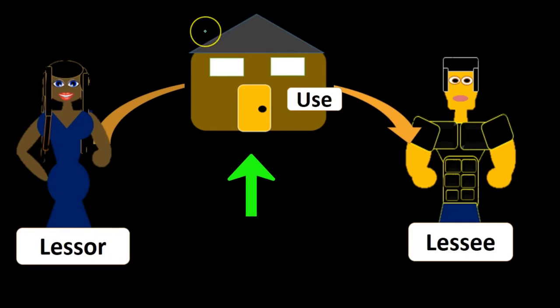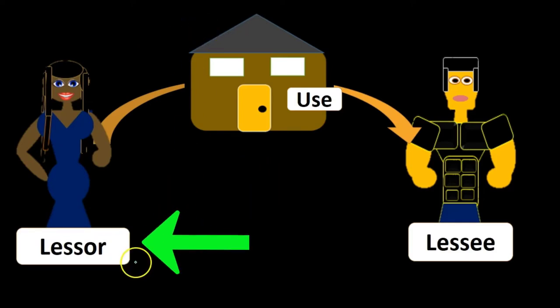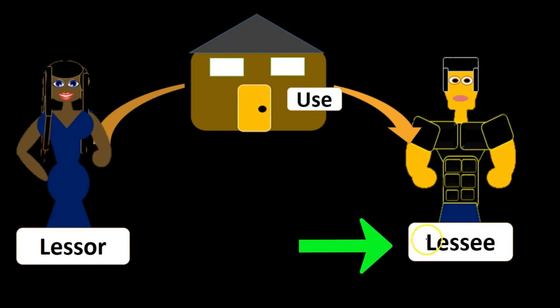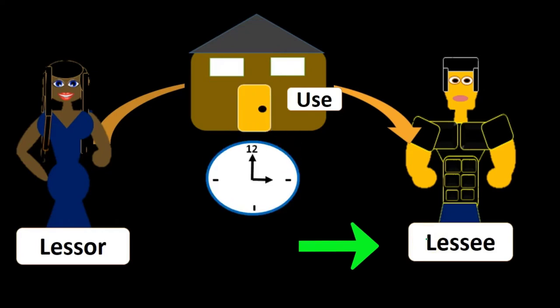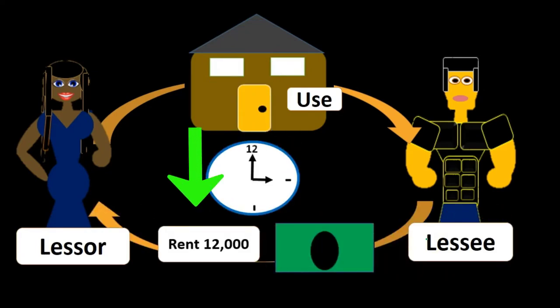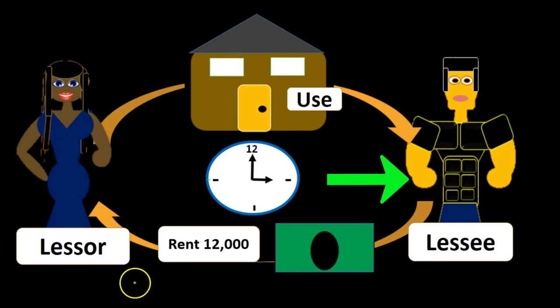For example, we could have a transaction such as this, where this is the piece of property. We have the lessor — the owner of the property — allowing the usage of that property to the lessee. As time passes, the lessee will then owe the lessor rent for the usage of that property. At the end of the leased period, the property would then be returned from the lessee back to the lessor.